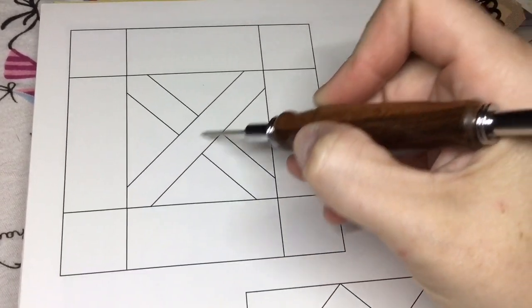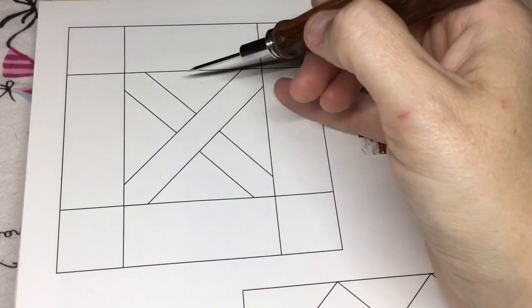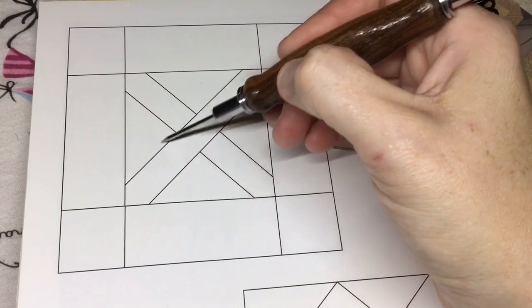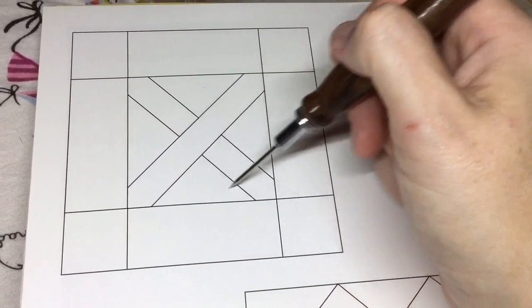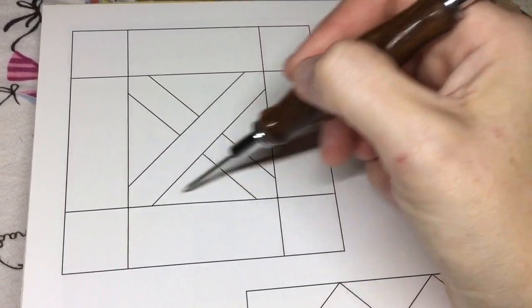This is going to be an assembly unit in order to form this center block, and then it's just a matter of adding the edge rectangles.